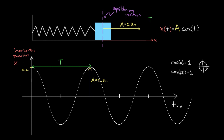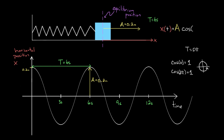If we just have t inside, the period is always two pi because that's when cosine of t resets. But our period is whatever it is — say six seconds for a particular case. We would not want a function that resets after two pi seconds; we need one that resets after six seconds. So we have to add a little variable: omega, multiplied by t. We can tune omega however we want to make the period of the function whatever we need.